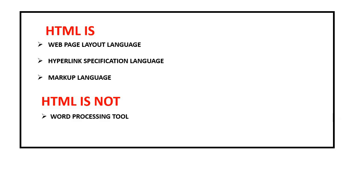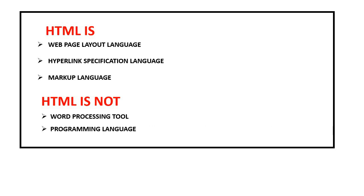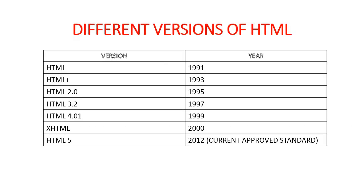What HTML is not: it is not a word processing tool. In word processing you can edit the data which is displayed, but in HTML you cannot, because the people surfing the internet don't have access to the source code of the web pages — they can only see the web pages. The designing of the source code is with the programmer or the website developer only. It is also not a programming language.